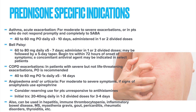Now let's talk about some specific indications for using prednisone. There are a few examples listed here. I am only going to briefly discuss asthma exacerbations, COPD exacerbations, and urticaria, as I feel this is what you will see most often in the outpatient setting. For adult patients with moderate to severe asthma exacerbations, or for those who do not improve promptly and completely using a short-acting beta agonist, oral prednisone is indicated. The general dosing is 40 to 60 milligrams by mouth per day for 3 to 10 days, administered in one or two divided doses.